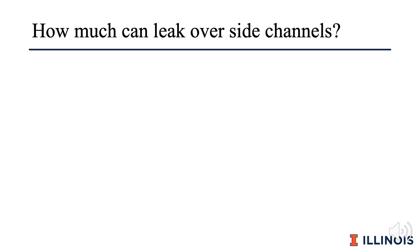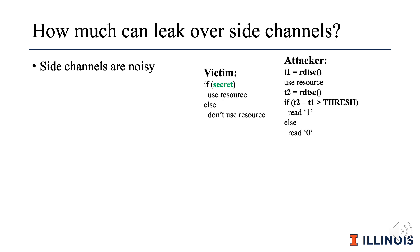The motivational question behind this work is how much we can leak over side channels. Side channels are highly noisy because of their implementation. If we look at the code on the right, the victim, based on a secret, either uses a resource or not. The attacker will try to time its own usage of the same resource, and depending on the execution time and the threshold, will disambiguate if the victim used that resource or not.